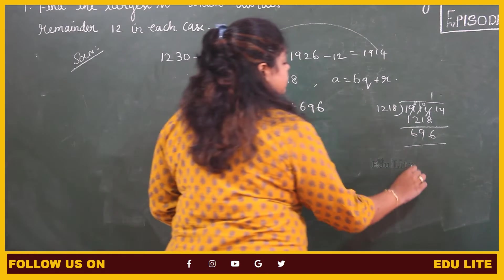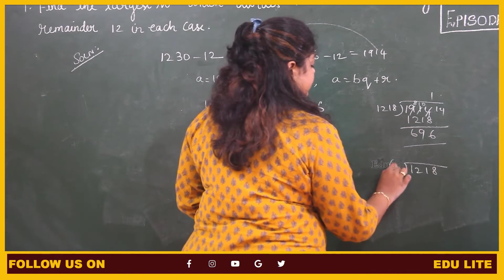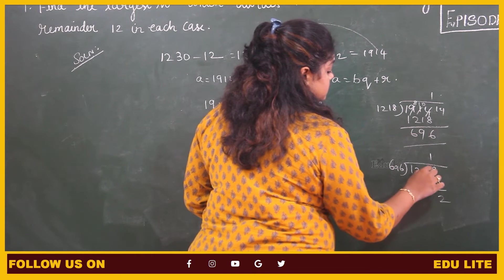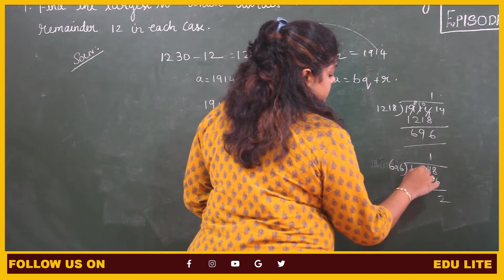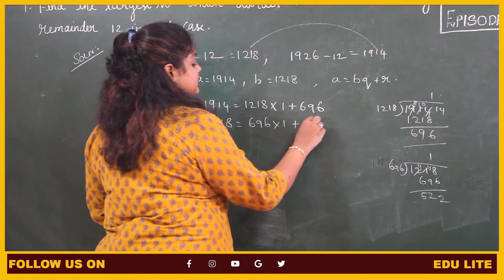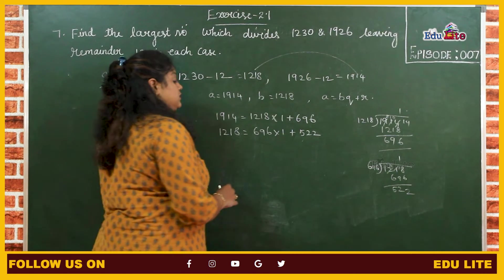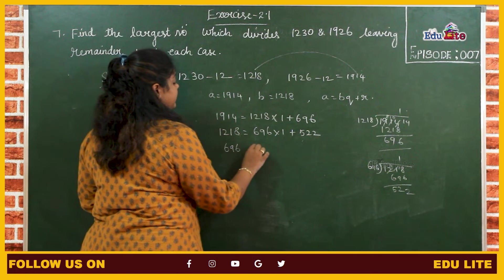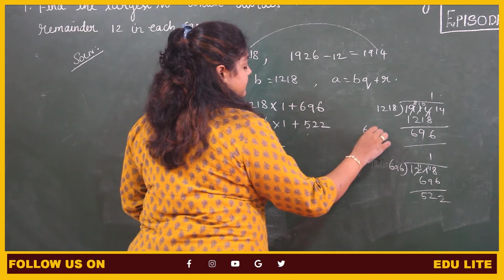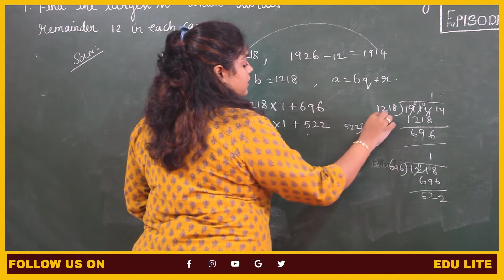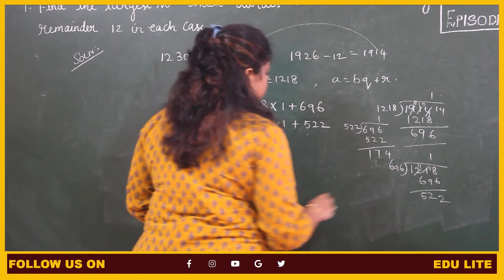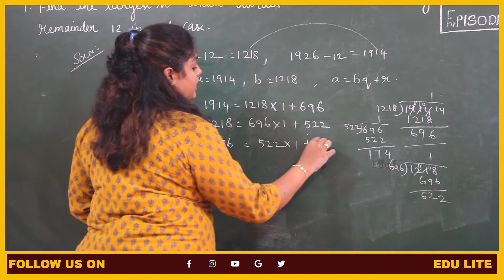Now the dividend is 1218 and the divisor is 696. So let us divide 1218 by 696: 1 times, remainder 522. So 696 into 1 plus 522. Again the remainder is not 0, therefore we have to proceed. 696 is the dividend, 522 is the divisor. 696 divided by 522: 1 times 522, remainder 174. So 522 into 1 plus 174.